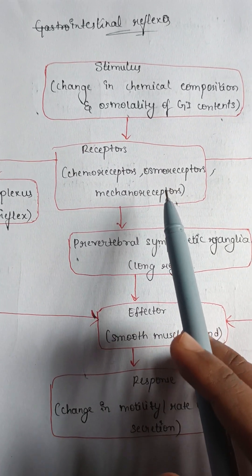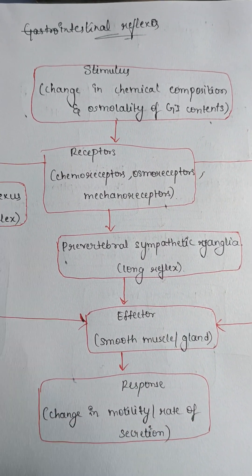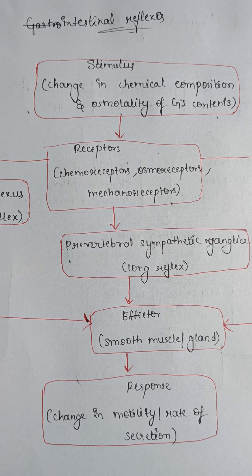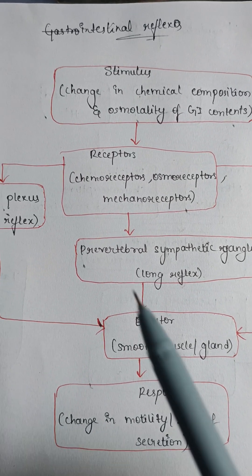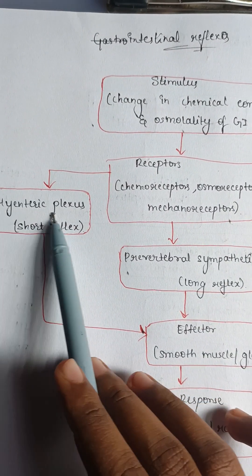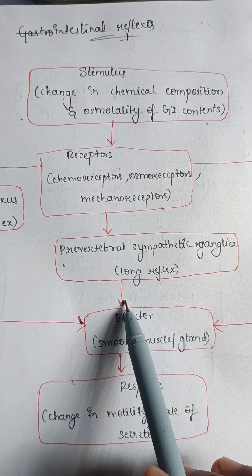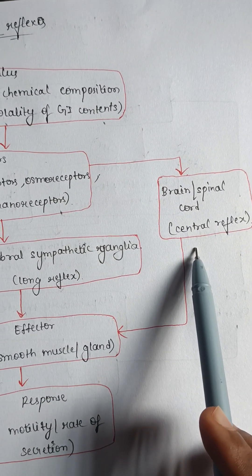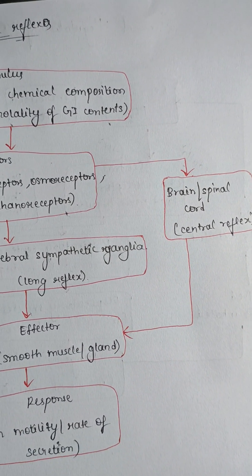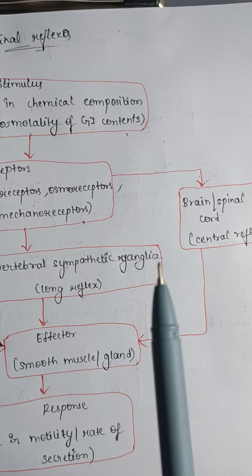Today we are learning about gastrointestinal reflexes. There are three types of reflexes which operate the GI system: short reflex, also called myenteric reflexes, long reflex, and the brain or spinal cord where central reflex takes place.